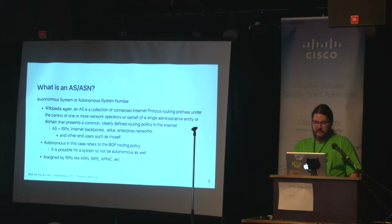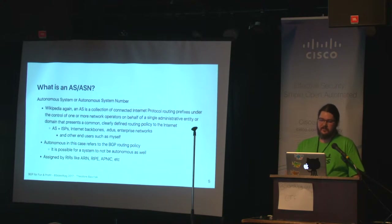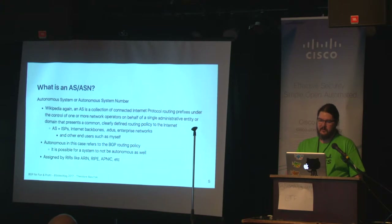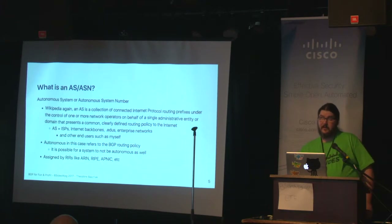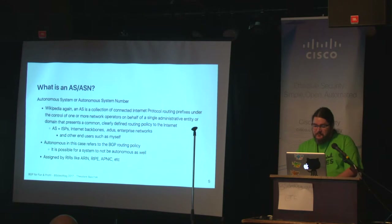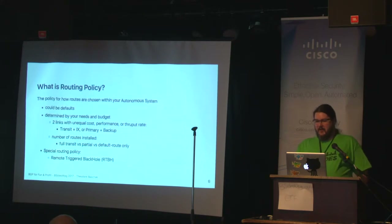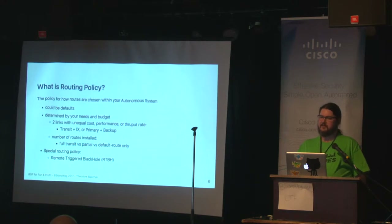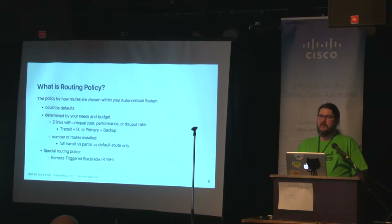The 'autonomous' refers to the BGP routing policy, and it is possible for a system to not be autonomous — that's usually a problem, but not always. ASes are assigned by RIRs: ARIN in the North American region, RIPE in the European region, and APNIC in the Asia Pacific region. The routing policy is how routes are chosen within your autonomous system — you could just leave things at defaults and let BGP do its thing, which it does pretty well.